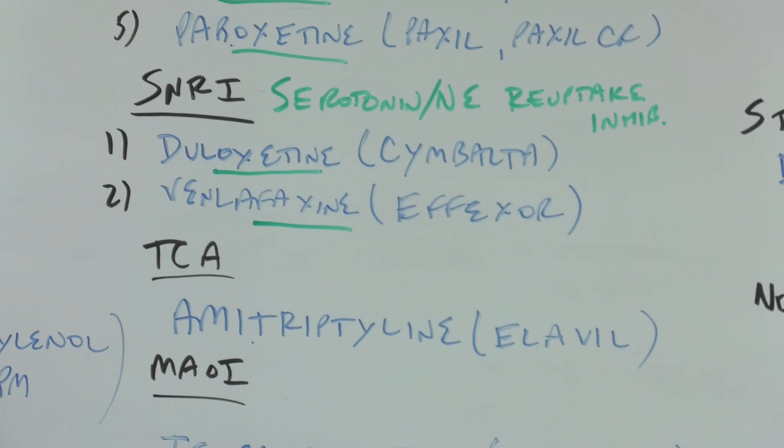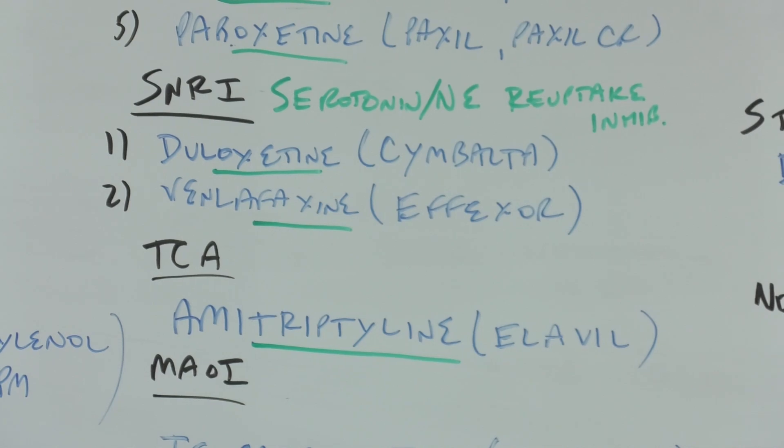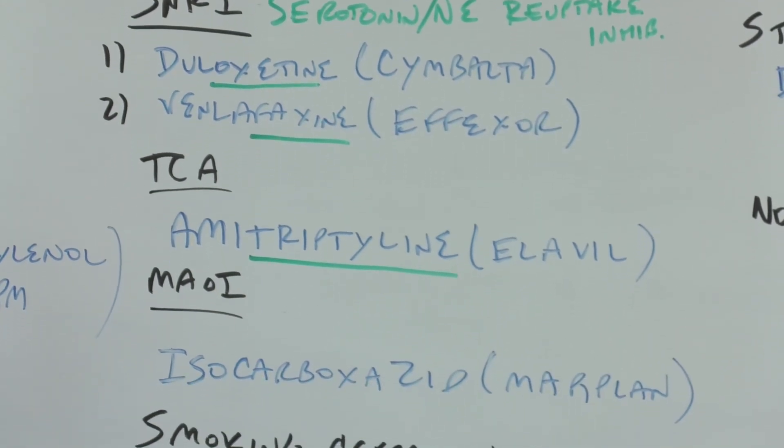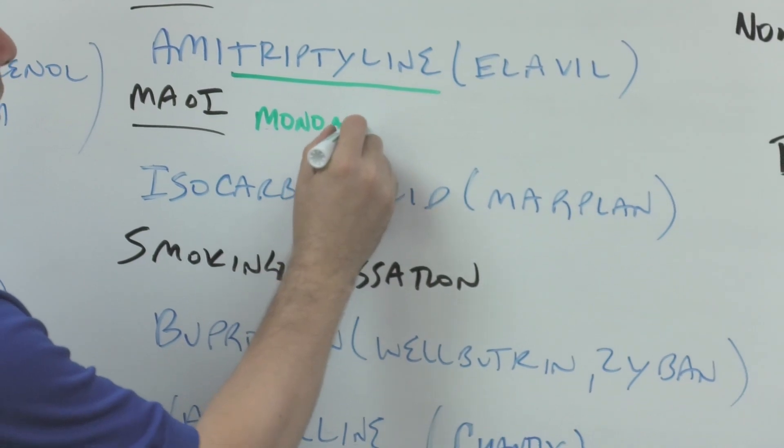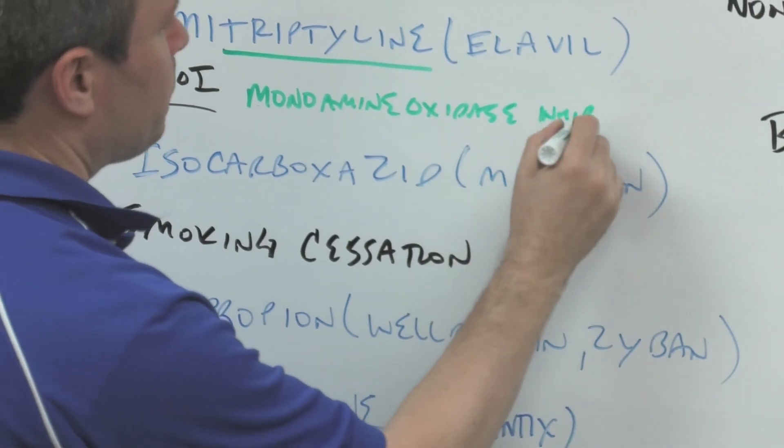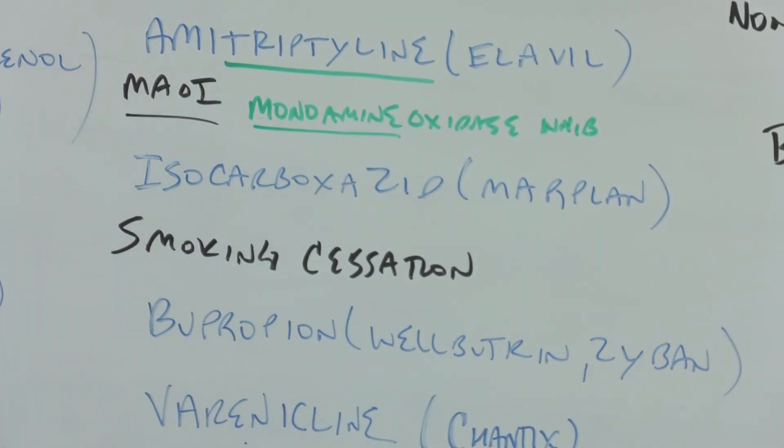The TCA - tricyclic antidepressant is named after the three rings, so you can see that tri in the stem triptyline. Amitriptyline is Elavil, elevates your mood. Isocarboxazid - I had a student that said it just seemed very sad. It's a monoamine oxidase inhibitor MAOI. That monoamine really means we're still going back to serotonin, which is a monoamine, we're just calling it by a different name.